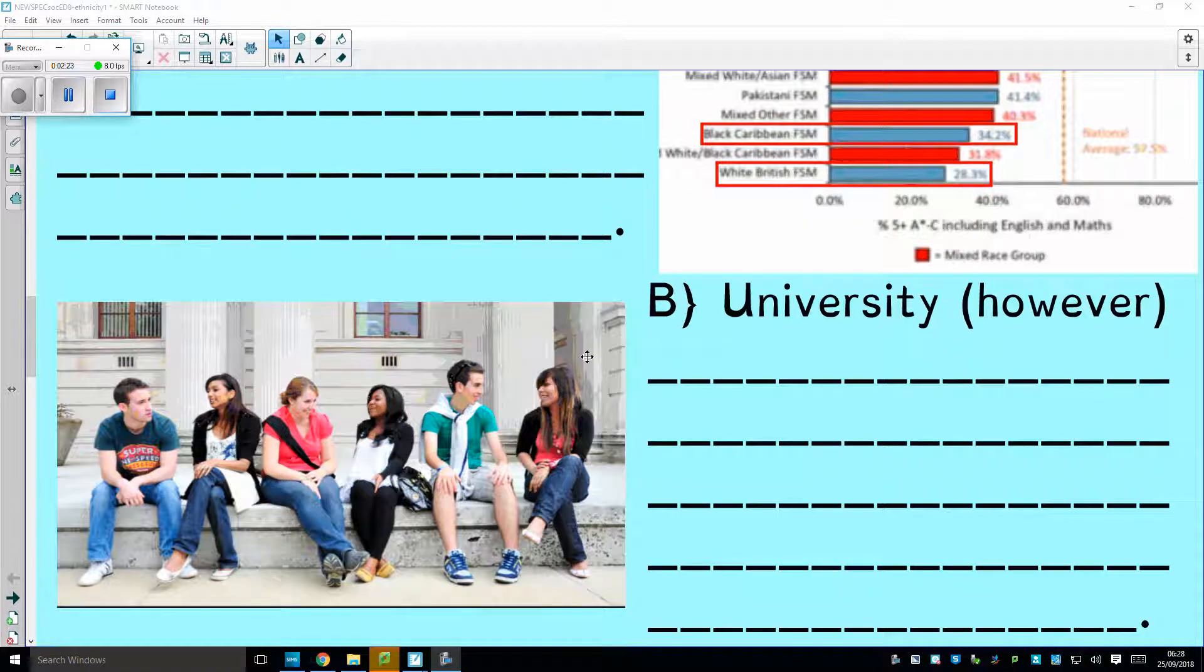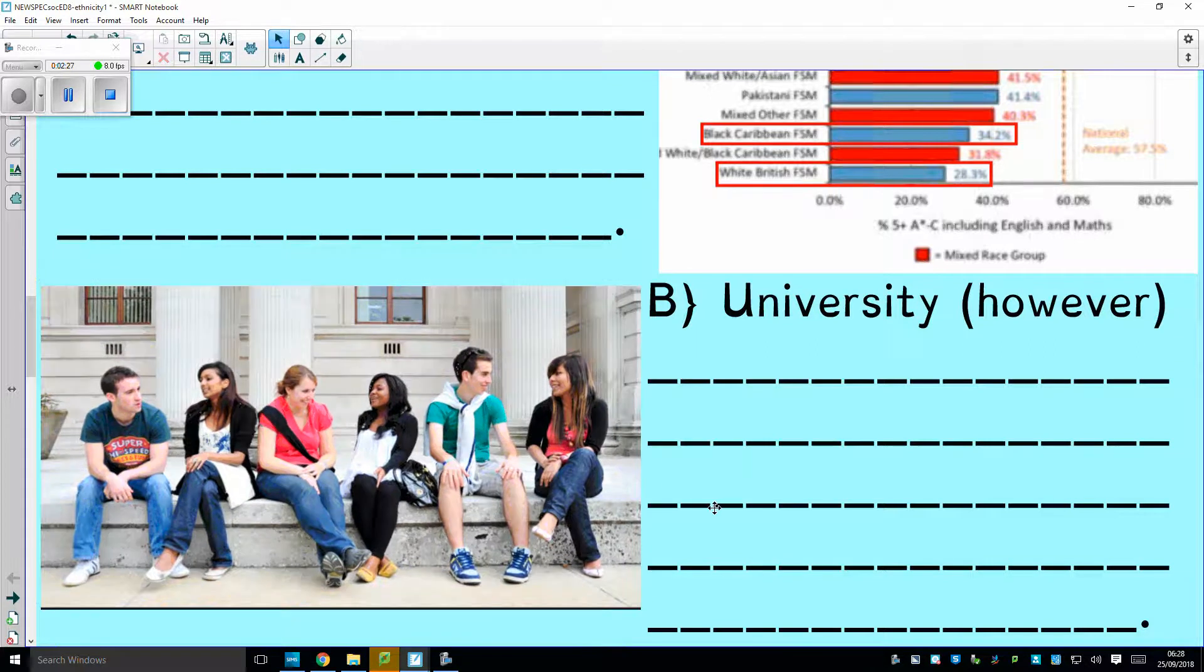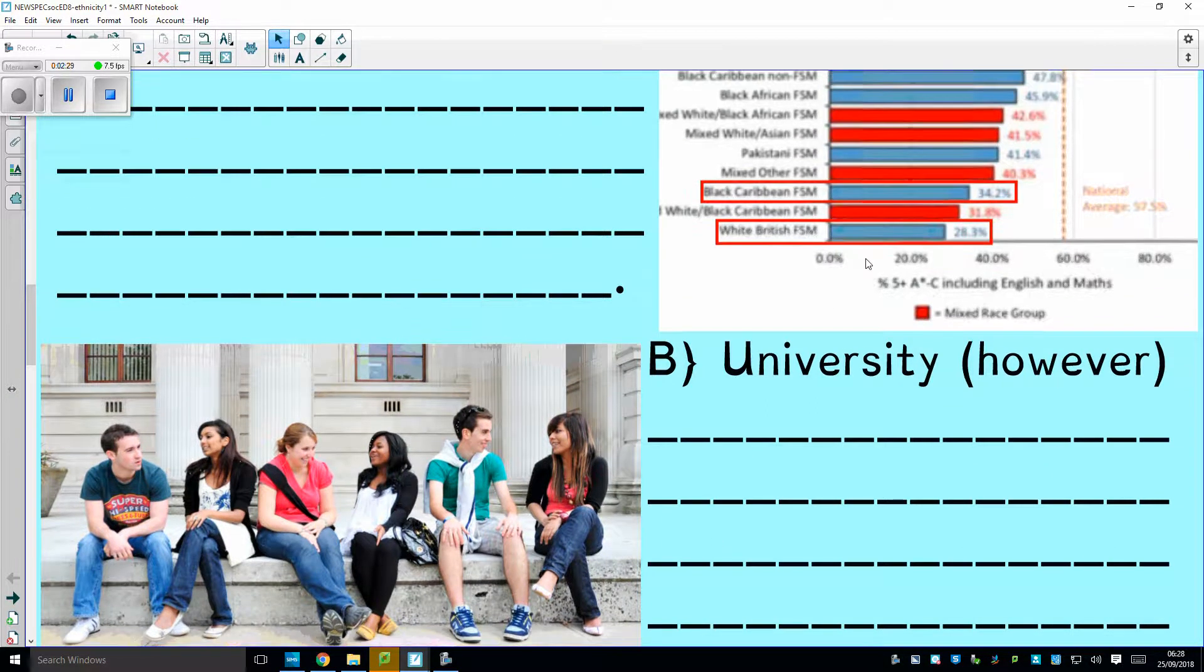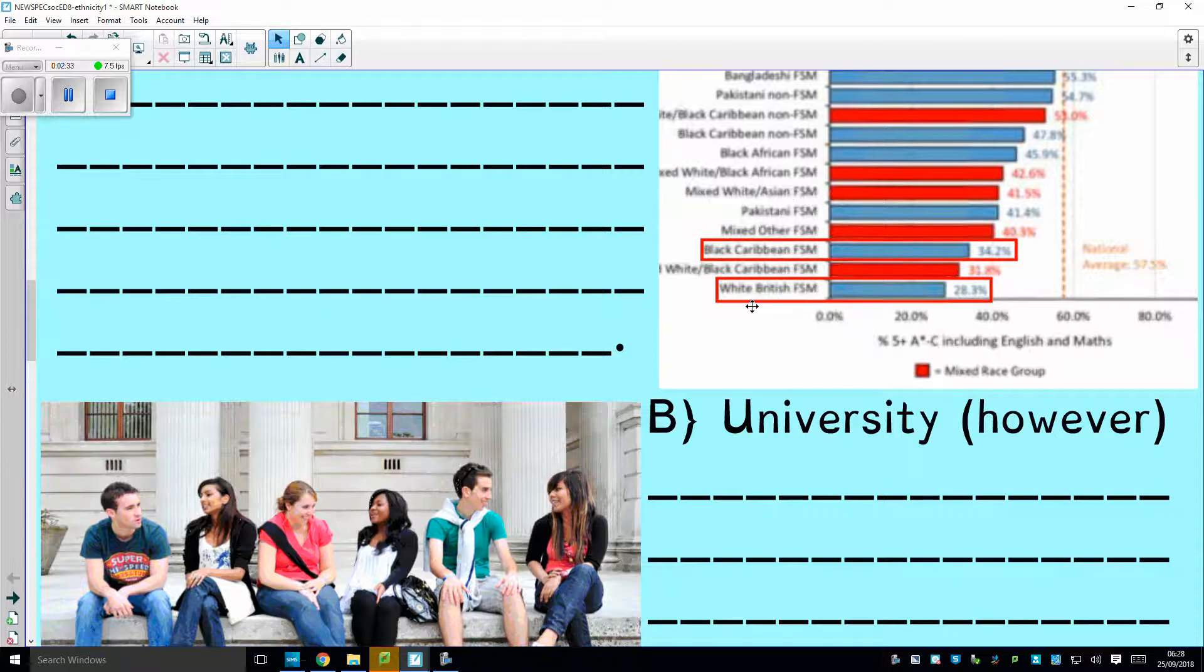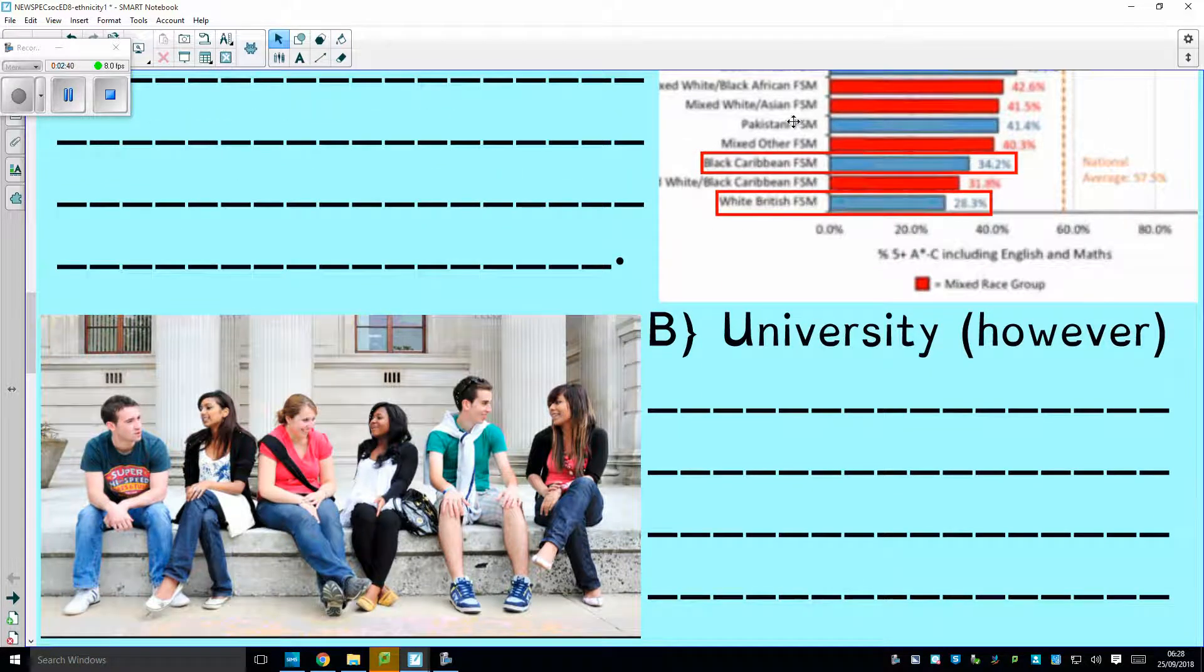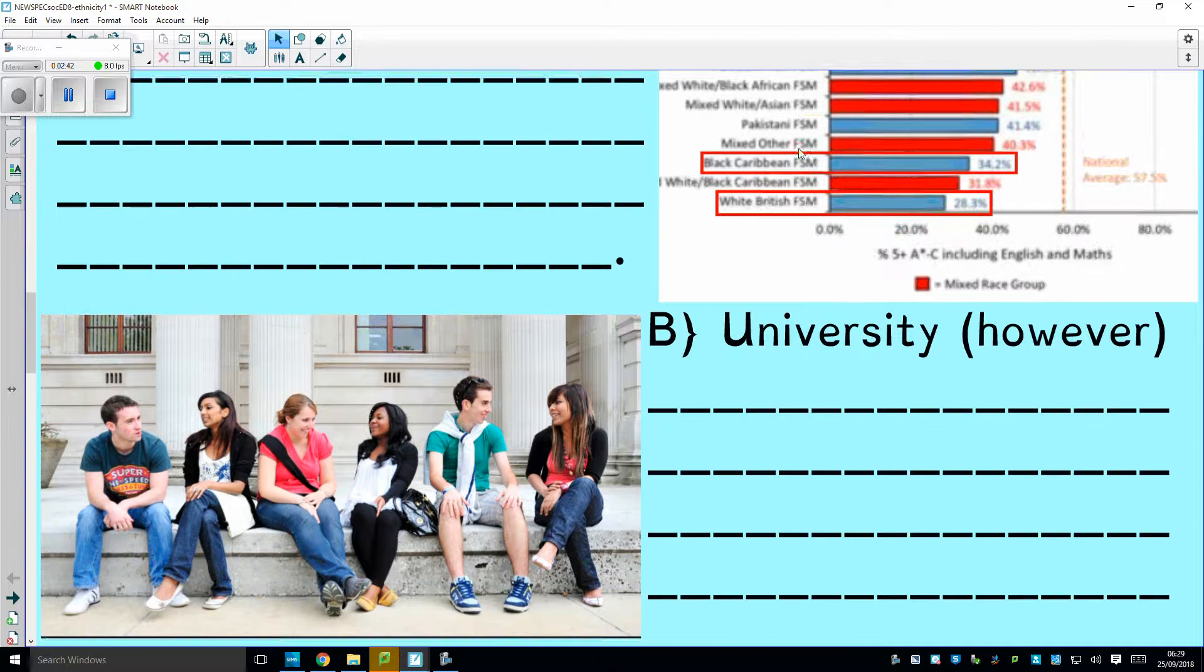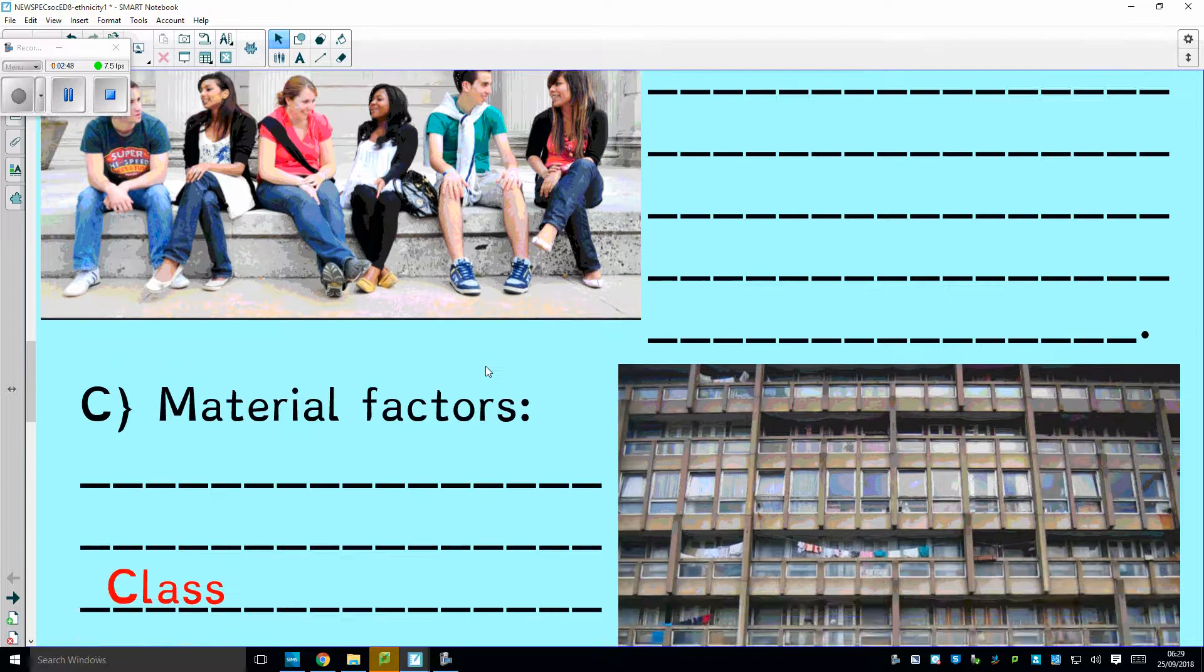However, the first however here is when you look at stats for kids going to university, way more of these groups down here, Pakistani, that sort of thing, way more of these kids go to university than the white British kids. So although their grades aren't as good, the ones that do pass, many more of them go on to university as a percentage.